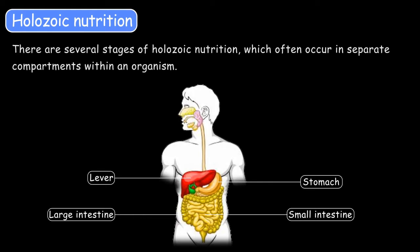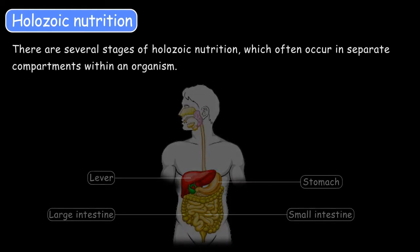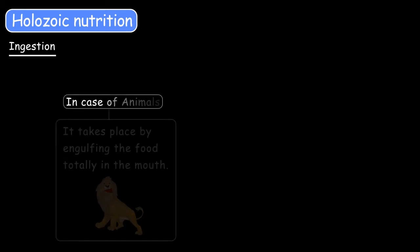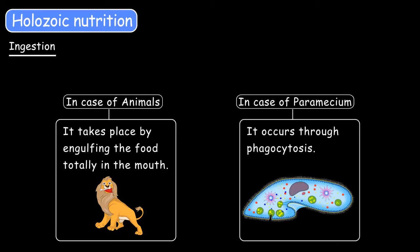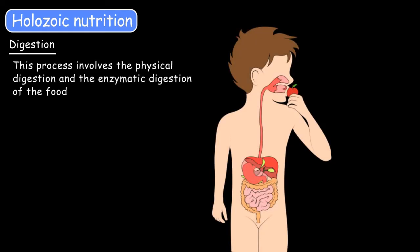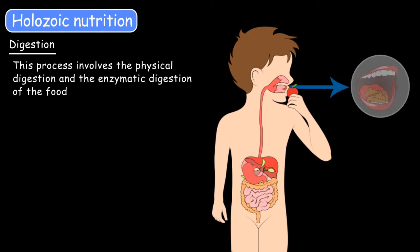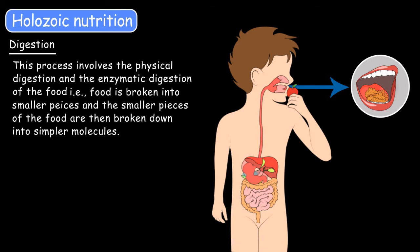Now let's learn about different stages of holozoic nutrition. Ingestion takes place by engulfing the food totally in the mouth. In a paramecium, it occurs through phagocytosis. Digestion involves physical digestion and enzymatic digestion of the food — food is broken down into smaller pieces, and then these pieces are broken down into simpler molecules.